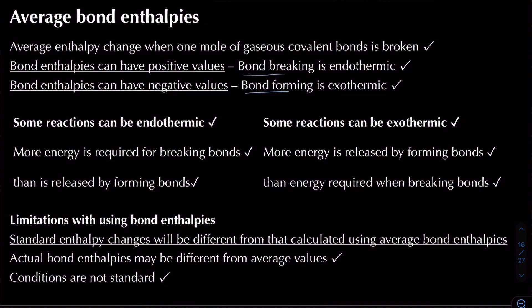There are limitations when using bond enthalpies. Standard enthalpy changes differ from those calculated using average bond enthalpies for two reasons. First, actual bond enthalpies may differ from average values, since bond enthalpies vary from compound to compound — for example, a C–C bond varies in strength across different compounds.